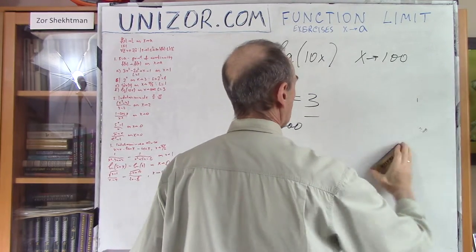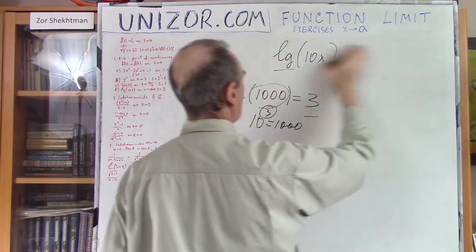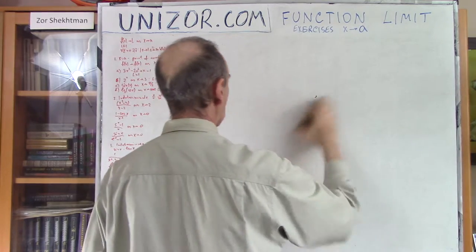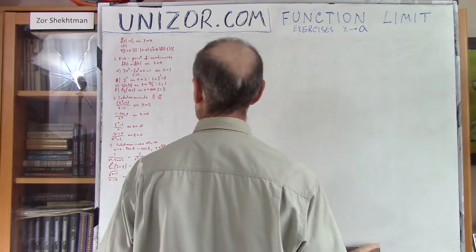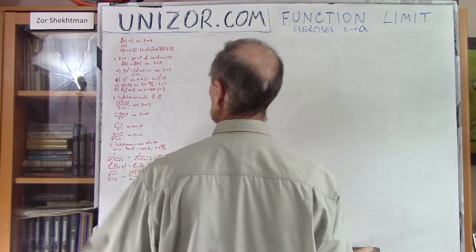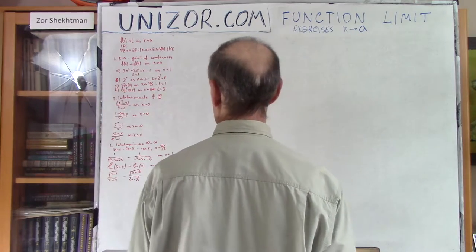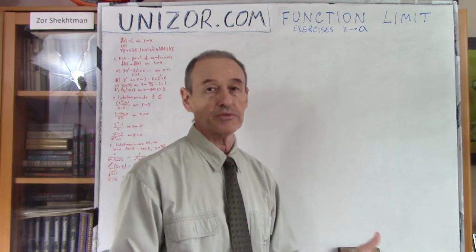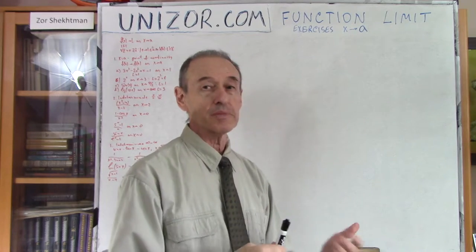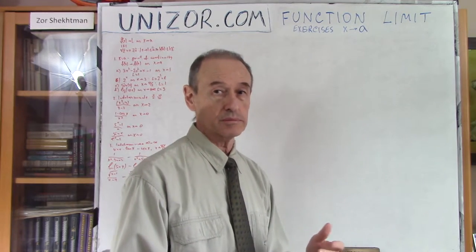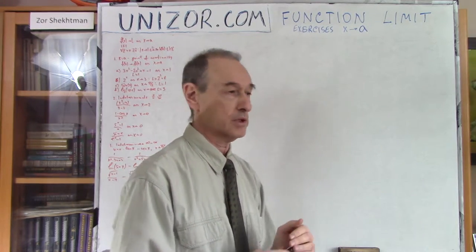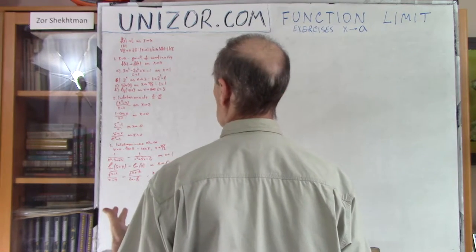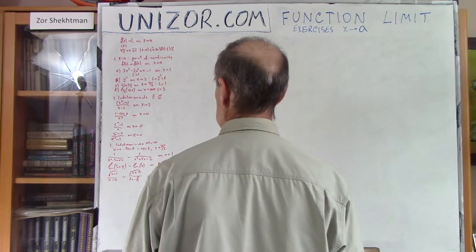These are all examples of different continuous functions — polynomial, exponential, trigonometric, and logarithmic. If you have just these simple functions or simple combinations of them, then basically you're in good shape. Now let's consider cases when it's not so obvious.